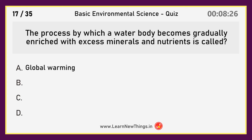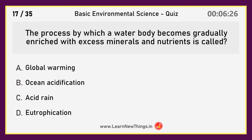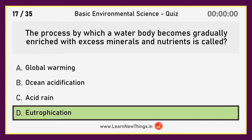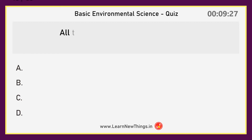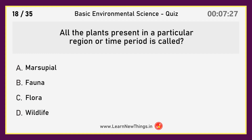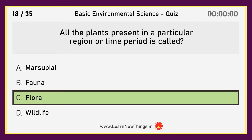The process by which a water body becomes gradually enriched with excess minerals and nutrients is called eutrophication. All the plants present in a particular region or time period is called flora.